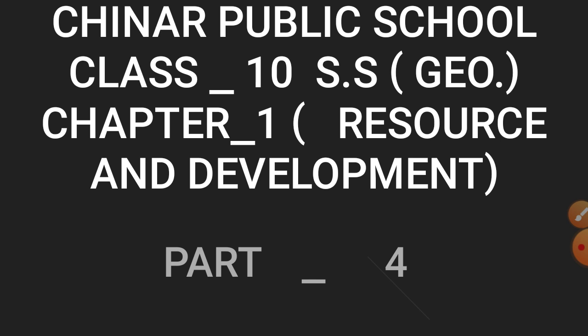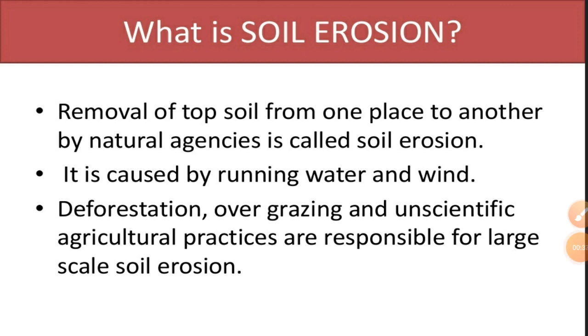In this module we will discuss soil degradation, meaning soil erosion, the different types of soil erosion, and how we can prevent it. Soil erosion is basically one cause of land degradation — it is a factor that degrades the land, reducing the fertility of the land.